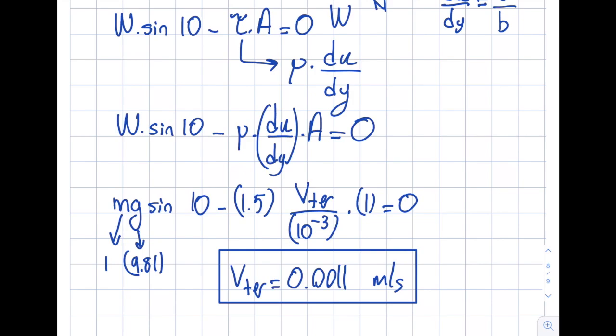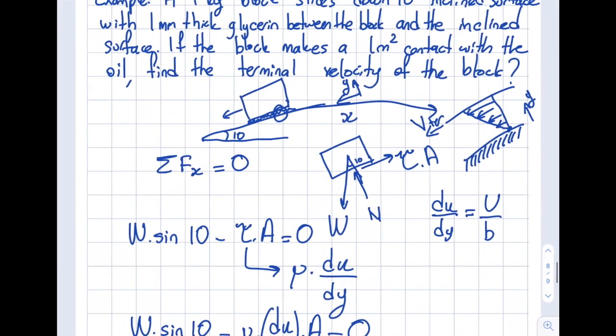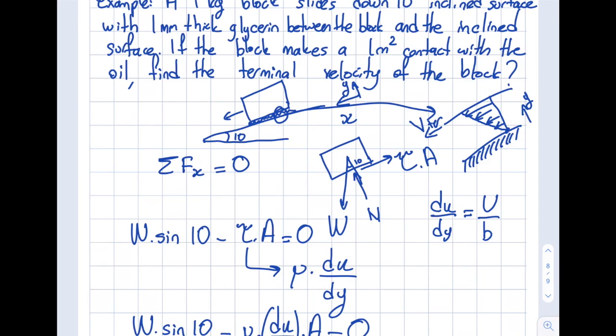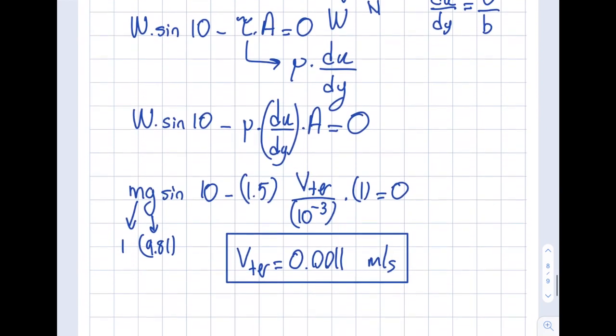Now I always want my students to assess whether this is a reasonable answer or not. This is a fairly small velocity. Does it make sense? Well, I would say yes. Number one, this angle is fairly small, only 10 degrees. And the area that makes contact is fairly large for 1 kg - 1 m² is fairly large. Also, if you look at glycerin, it's a pretty thick liquid, so it's making a lot of friction for me. So these all make sense.